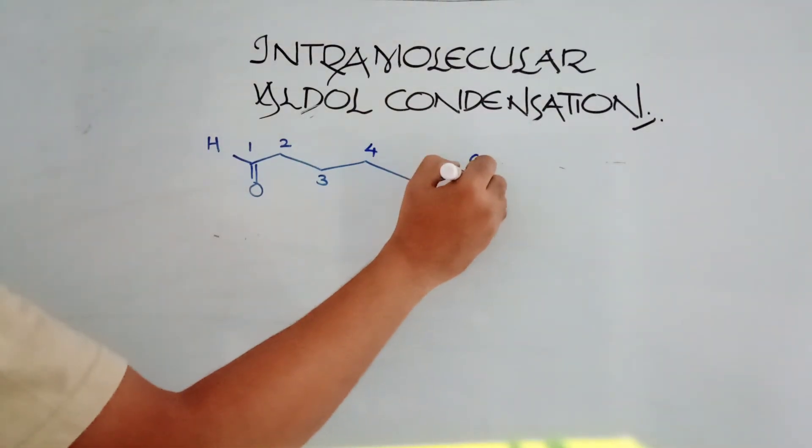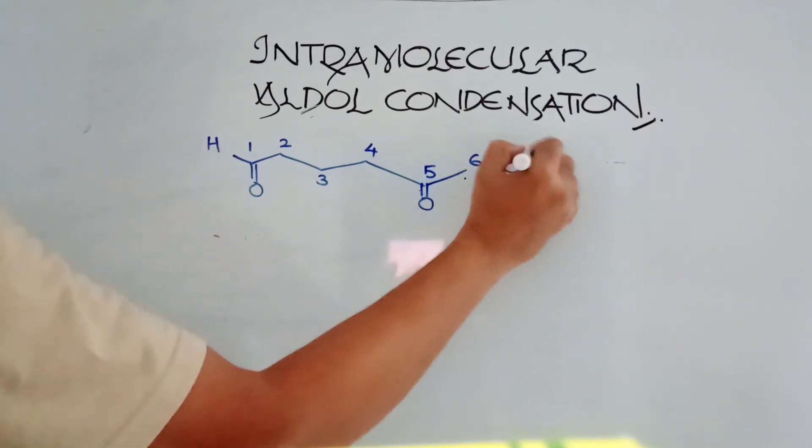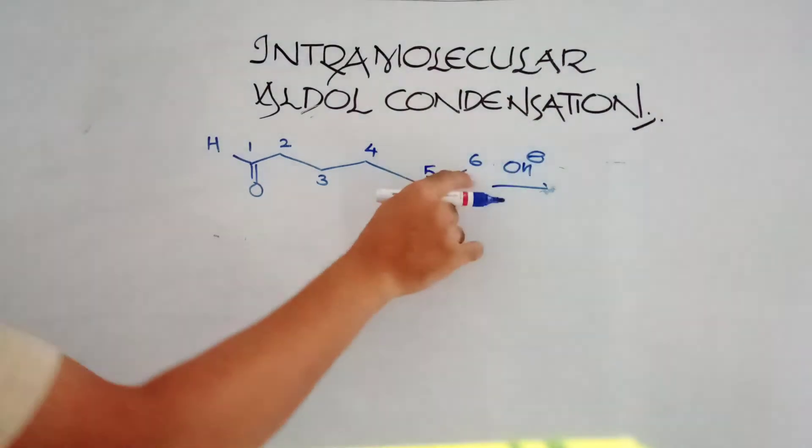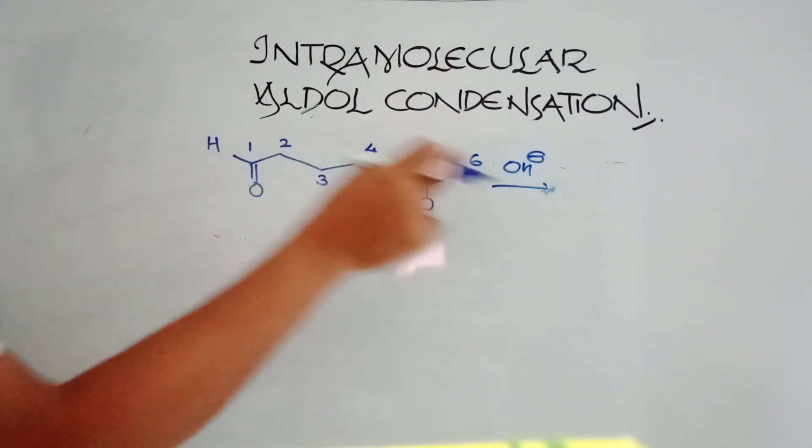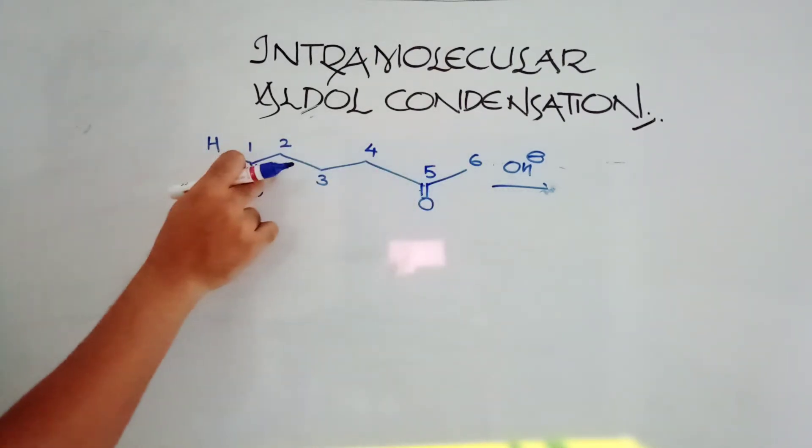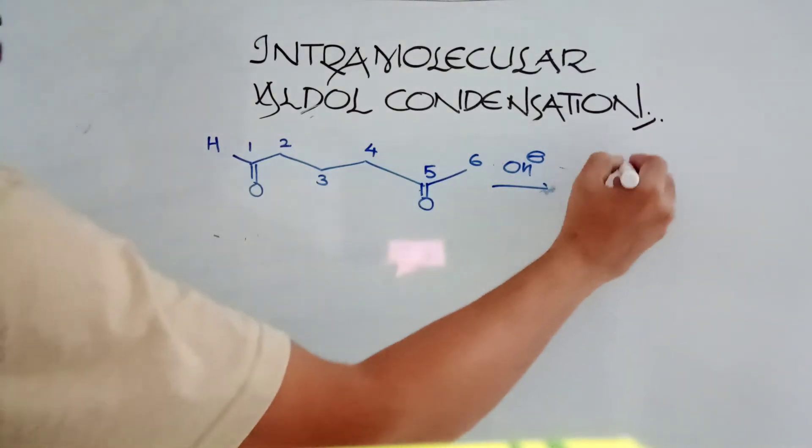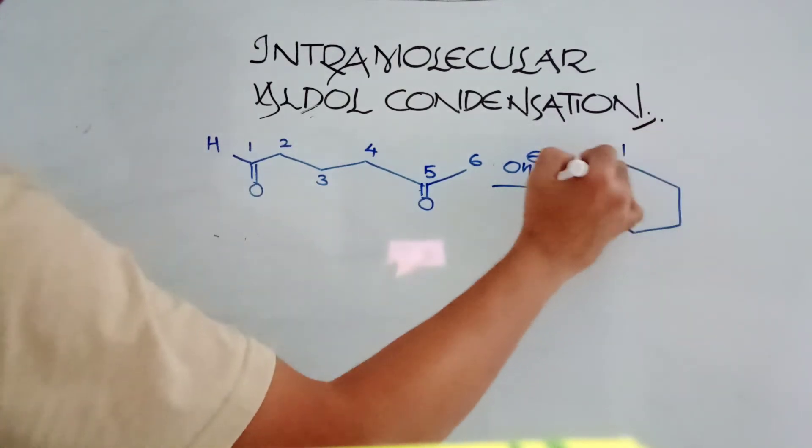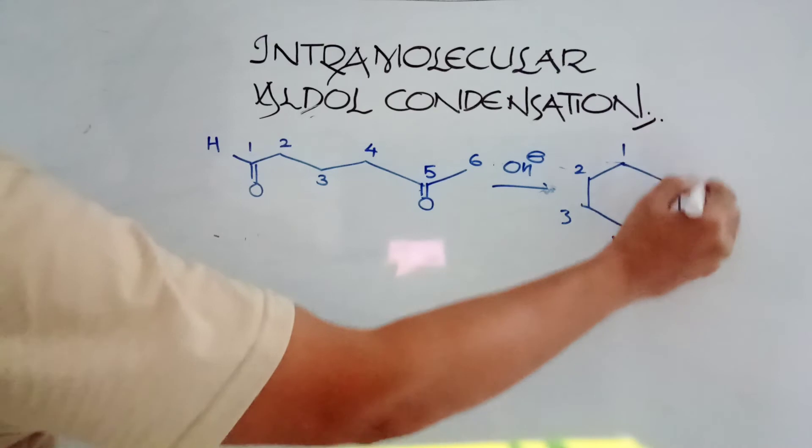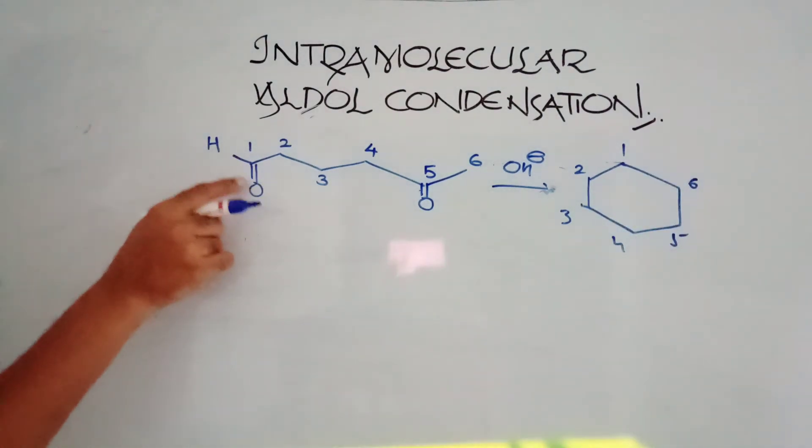What happens here? From here, hydrogen is going to be shifted. When you are using OH minus, that is base, hydrogen will go from here. It will become carbanion. This is going to attack here. So sixth place is going to attack on the first place. So you are going to get a six-member ring: one, two, three, four, five, and six.